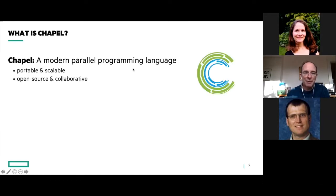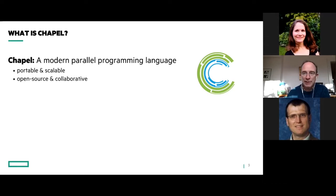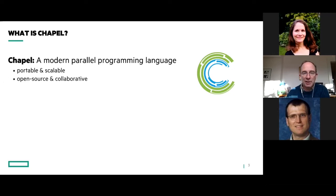So what is Chapel? Chapel is a modern parallel programming language designed to address those sweet spots from the previous slide. It's portable and scalable — it runs from my Mac laptop all the way onto the largest scale HPC systems, with commodity clusters and cloud-based systems in between. It's open source and collaborative, developed on GitHub with contributors from our user community, open source community, and other companies.